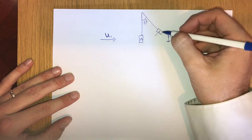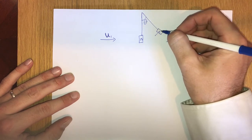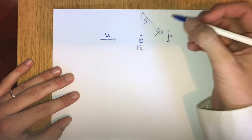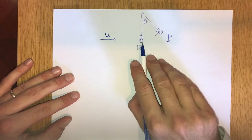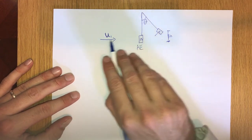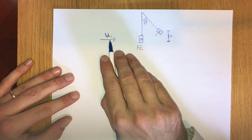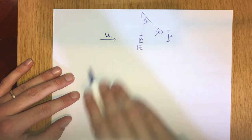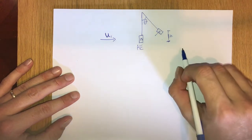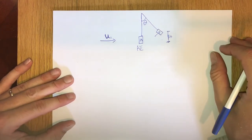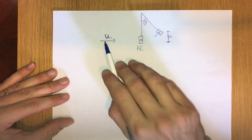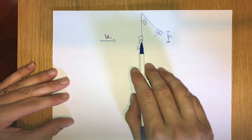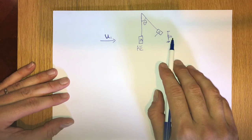We can use energy conservation — thinking about how the momentum from the dart is transferred into the system of the dart and the pendulum — the kinetic energy that this new dart-pendulum system possesses will be converted into potential energy as it moves up in Earth's gravity field. By equating those energies and applying momentum conservation, we can calculate the initial velocity of the dart.